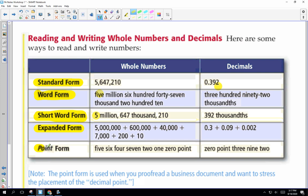Last one is point form. Some people like this because it's super precise. Five, six, four, seven, two, one, zero, point. Point is where the decimal point goes. And like it goes right here, right after the ten. Or in this case, the zero. All right. And this would be zero point three nine two. So you're just stating every number and then using the word point for the decimal point.